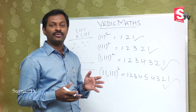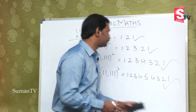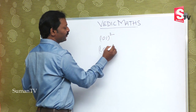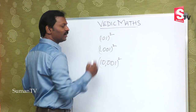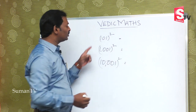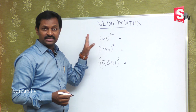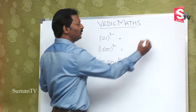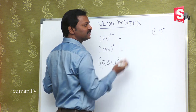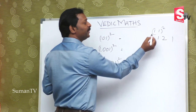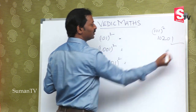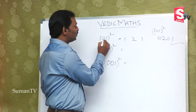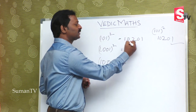Now suppose, if you take numbers with zeros included — like 101 whole square, or 1001 whole square, or 10001 whole square. If you close the zeros, you still have 11. So 11 squared is 121, and being 1 zero in between, you put a 0 in each gap. The answer is 10201.